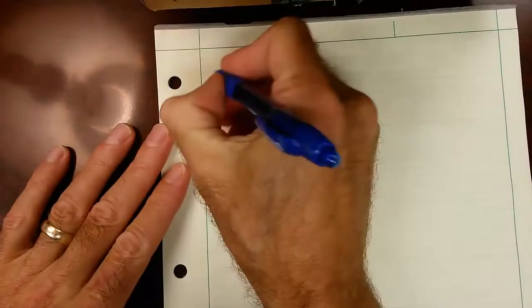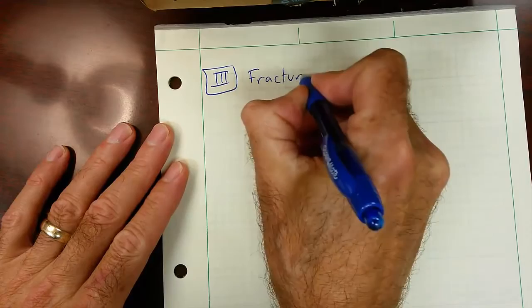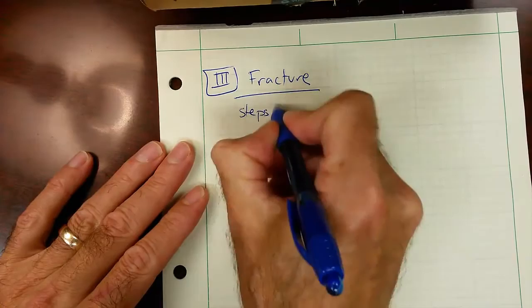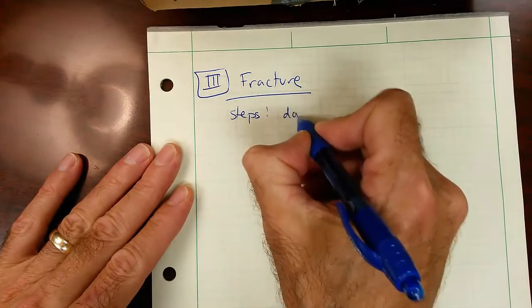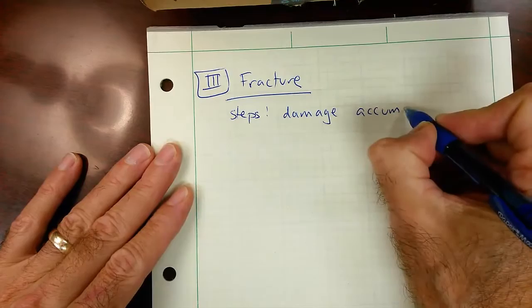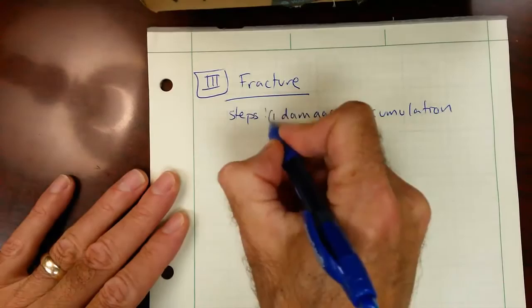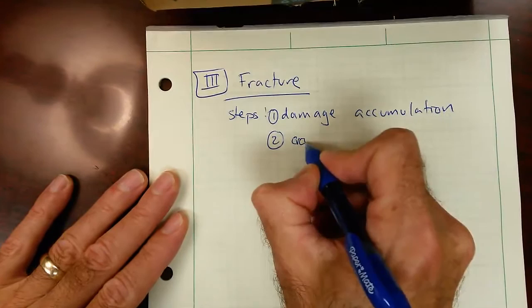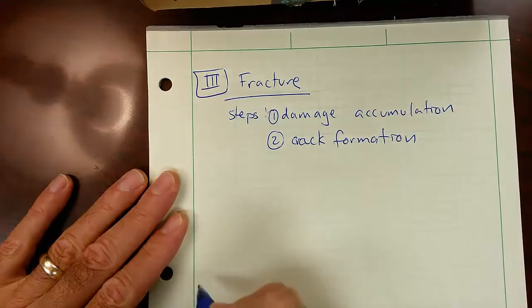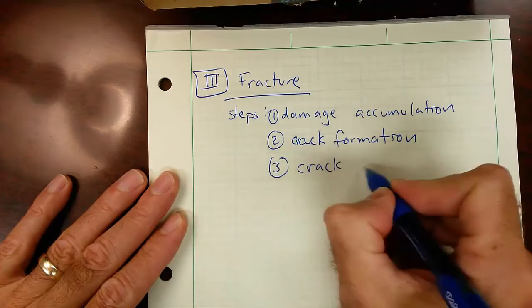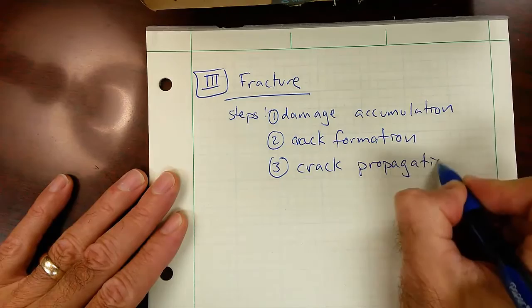Roman numeral III is fracture. There are three steps that lead to fracture. The first is damage accumulation. The second step is crack formation. And the third step is crack propagation.